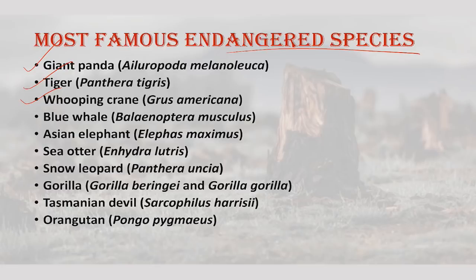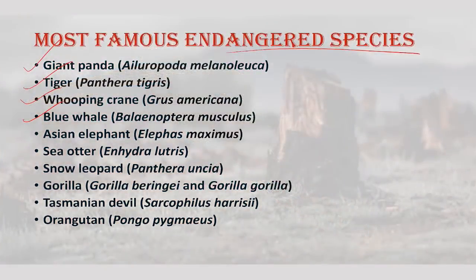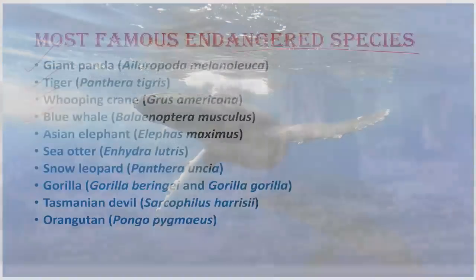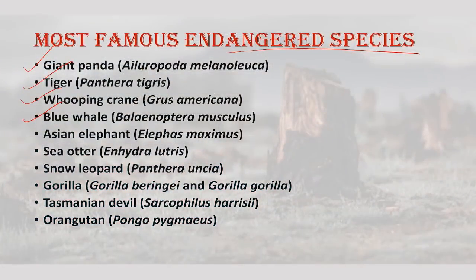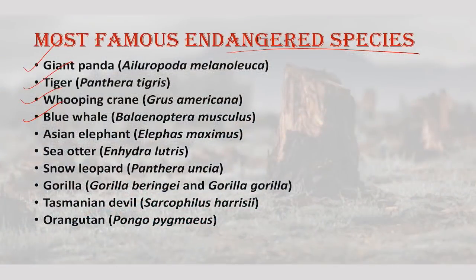The only self-sustaining population migrates between Alberta, Canada and Texas, USA. Then there is the blue whale — there are fewer than 25,000 blue whales, the largest animals on the planet. Blue whales are found in all the world's oceans save the Arctic. The current population is thought to have been reduced by up to 90% by whaling in the 20th century. Commercial hunting of the species was ultimately banned in 1966.